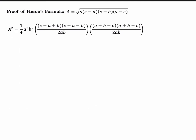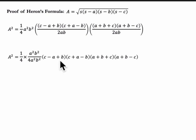The two denominators of 2ab multiply to give 4a squared b squared. The numerator has a one-fourth factor times a squared b squared. The a squared and b squared cancel, and we're left with one-sixteenth times the product of the four binomial factors.